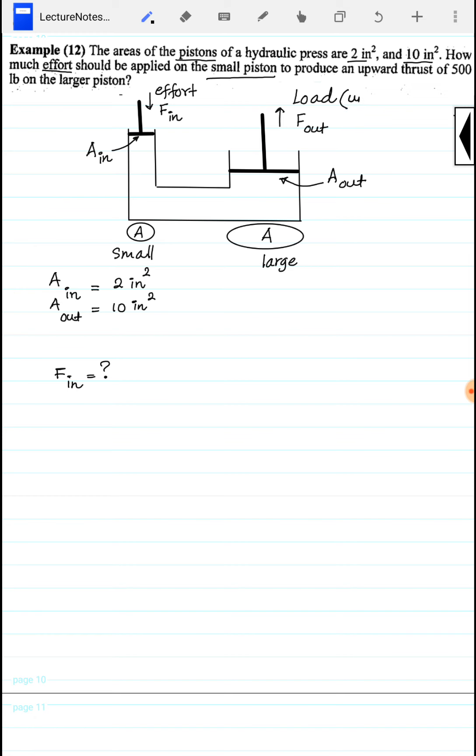The force output on the large piston, F_out, is 500 pounds. Now we will set up the equation to find F_in.